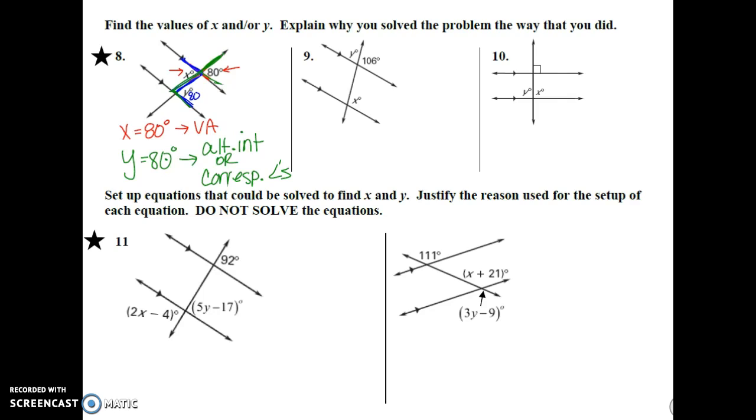Question number 11 I wanted to mention because it does say do not solve the equation. You're just supposed to set things up. So if you look at question number 11, I know I probably have to use this 92 because it doesn't have a variable in it. And if I look lower below it, I trace out the Y value. And you see that we have that upside down F. I know those are corresponding angles. So I know that 92 has to equal 5Y minus 17.